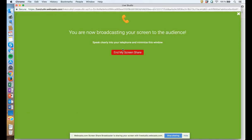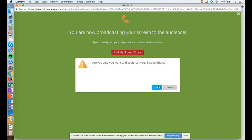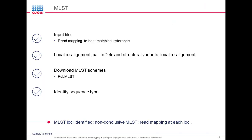The next thing we want to do is assign a multi-locus sequence type (MLST) to the Salmonella isolates. The input for this MLST tool will be the read mapping to the best matching reference identified previously. We will improve the mapping to ensure reliable results by doing local realignment. We then need to download the MLST scheme — we have direct access to all schemes available at PubMLST directly from within the software. Finally, we assign a sequence type, which will give us the MLST loci identified and also output the read mapping to each specific locus.